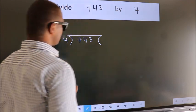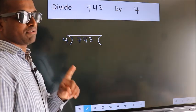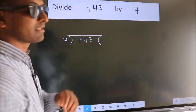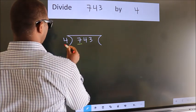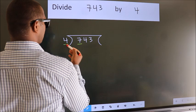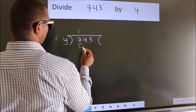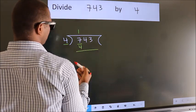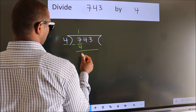This is your step 1. Next, here we have 7, here 4. A number close to 7 in the 4 table is 4 once 4. Now we should subtract, we get 3.